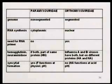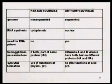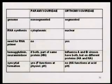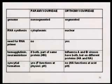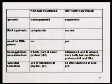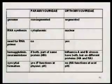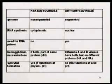Both paramyxoviruses and orthomyxoviruses are called myxoviruses, both are transmitted by the respiratory tract, and both have neuraminidases — or at least some members of both have them. The paramyxoviruses include human parainfluenza virus, measles virus, mumps virus, and respiratory syncytial virus, while the true influenza viruses include influenza A, B, and C. The genome in paramyxoviruses is non-segmented; in flu viruses it is segmented.